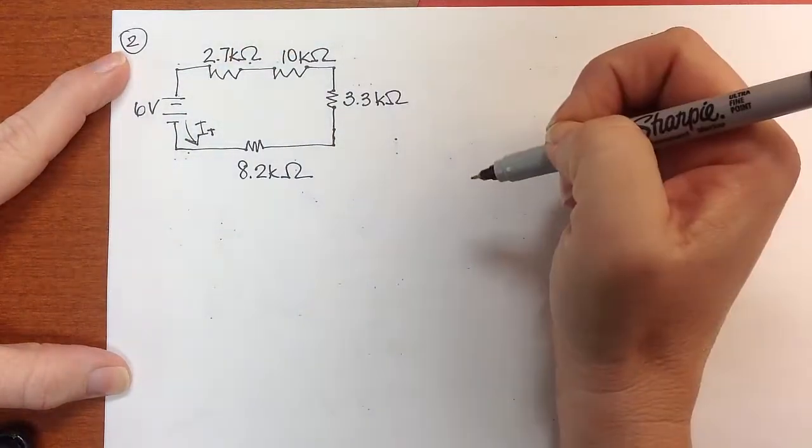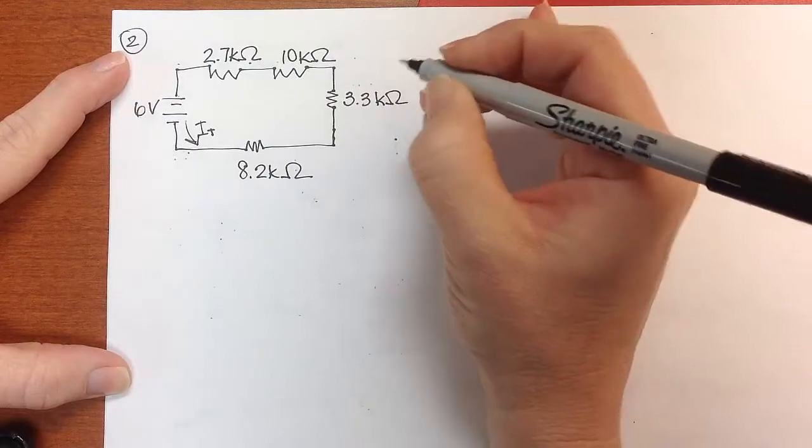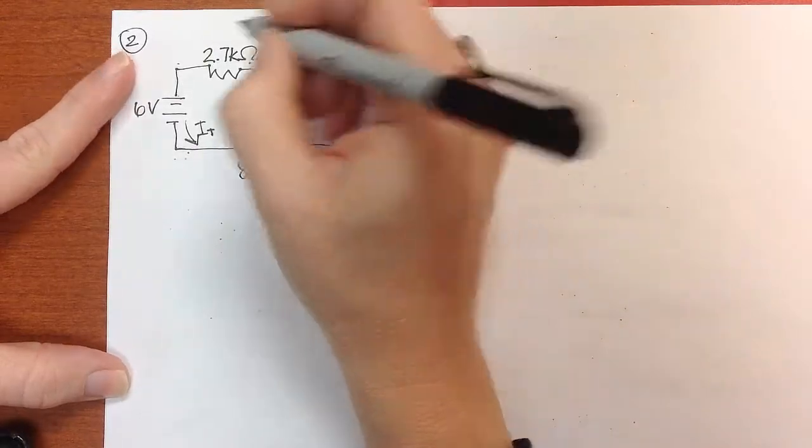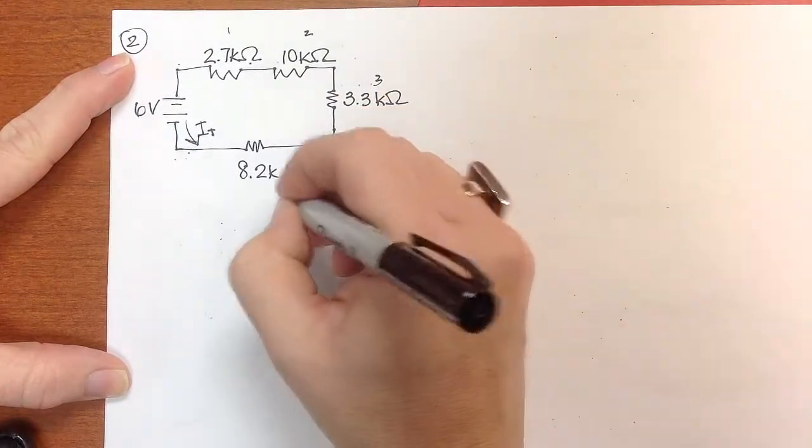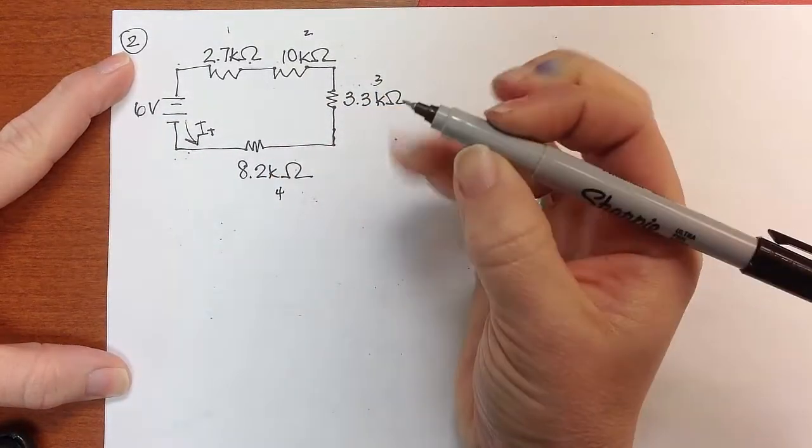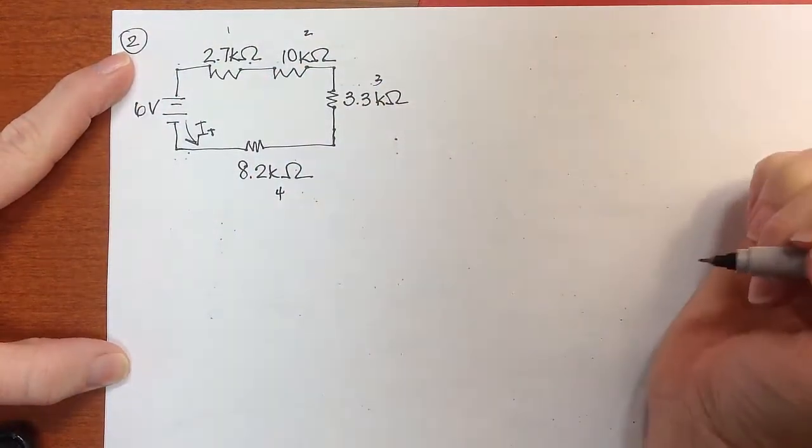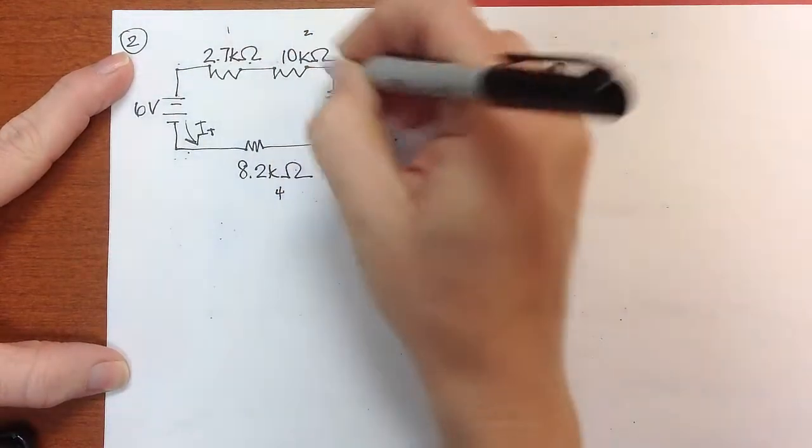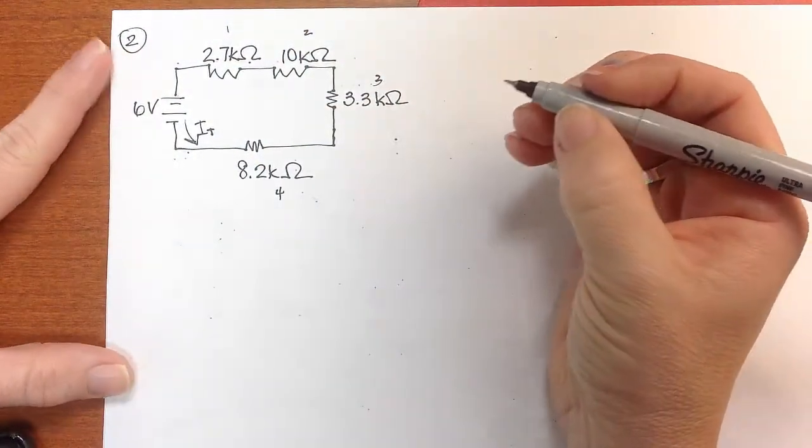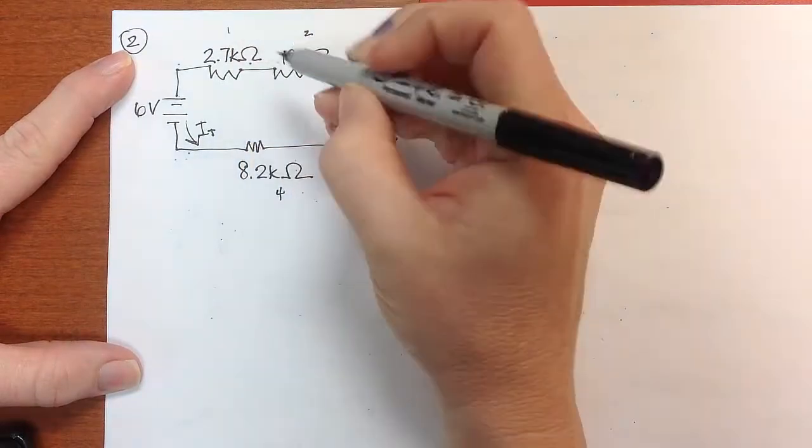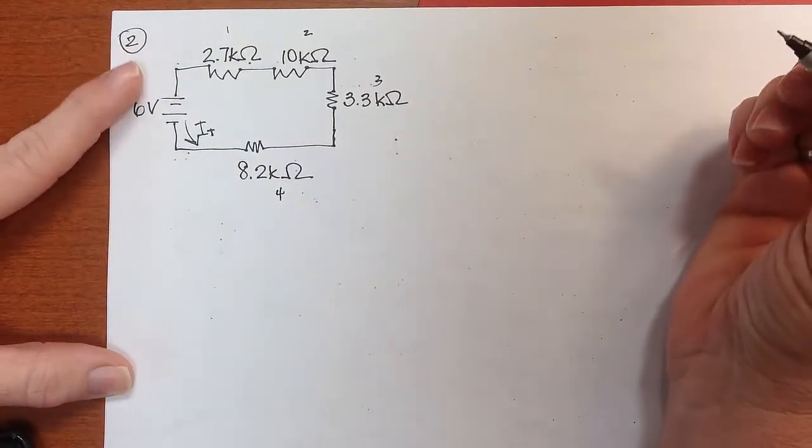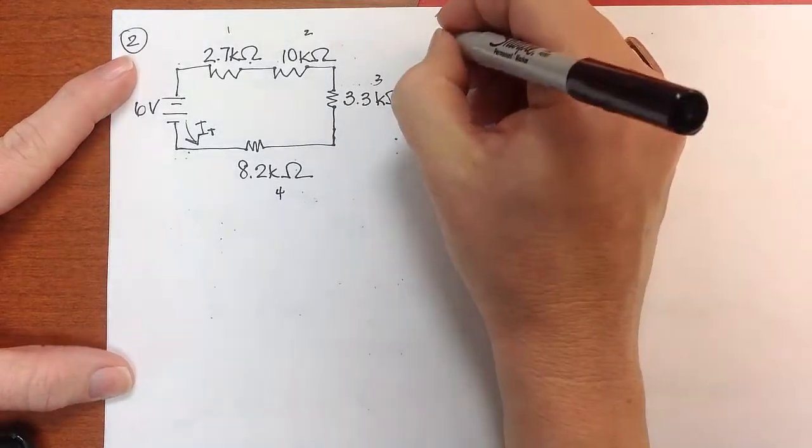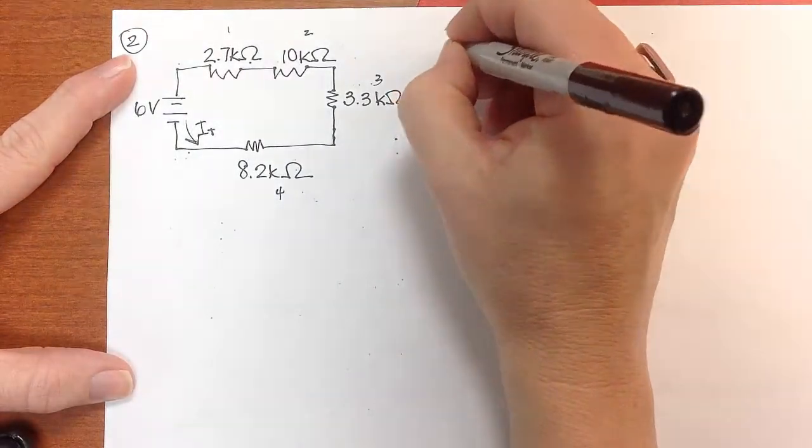There's going to be a voltage drop across each one of these resistors, and if we label them 1, 2, 3, and 4, you can see that the voltage drop across each one of those resistors should be equal to, once we add them all up, should equal 6 volts. Let's start first by finding the equivalent resistance.